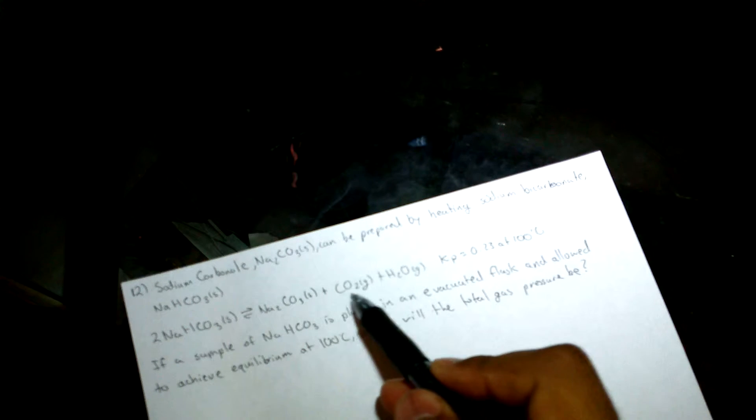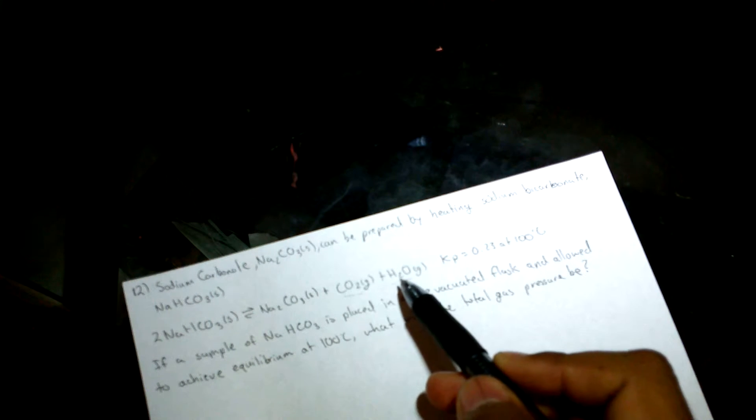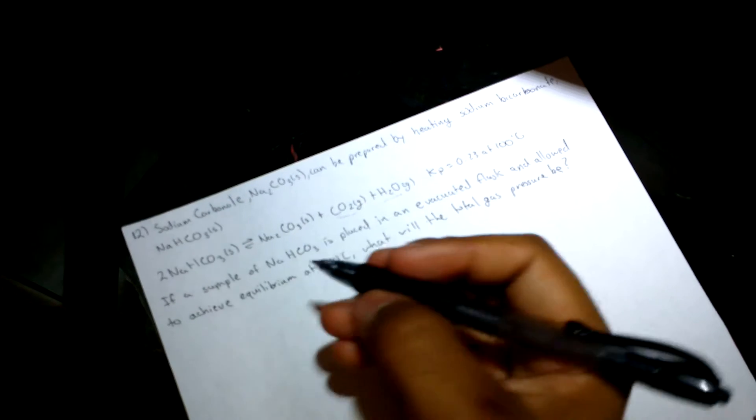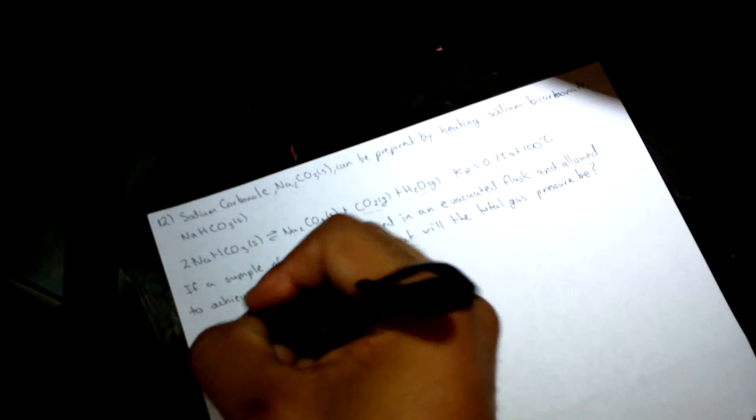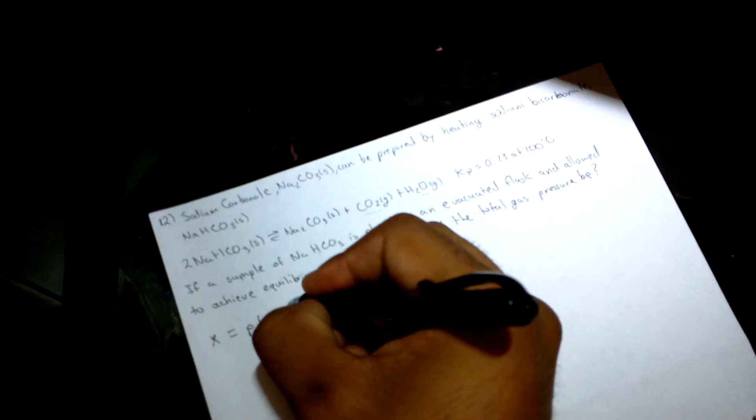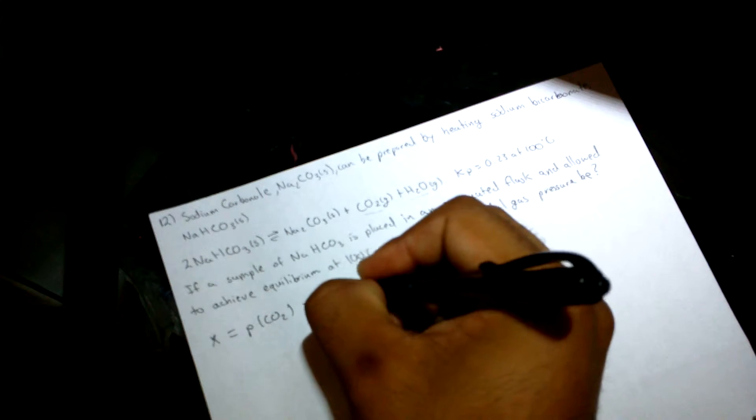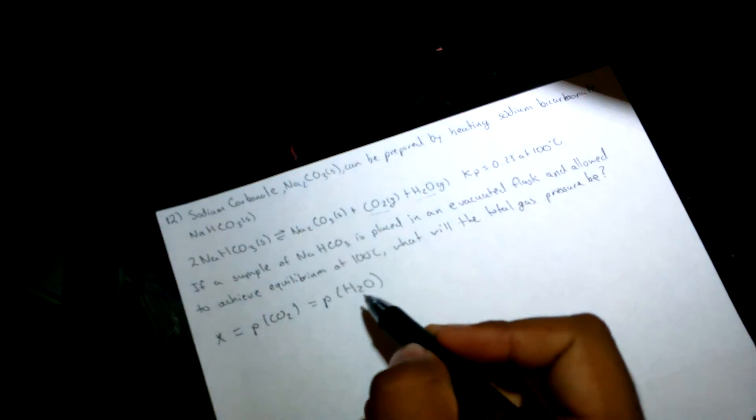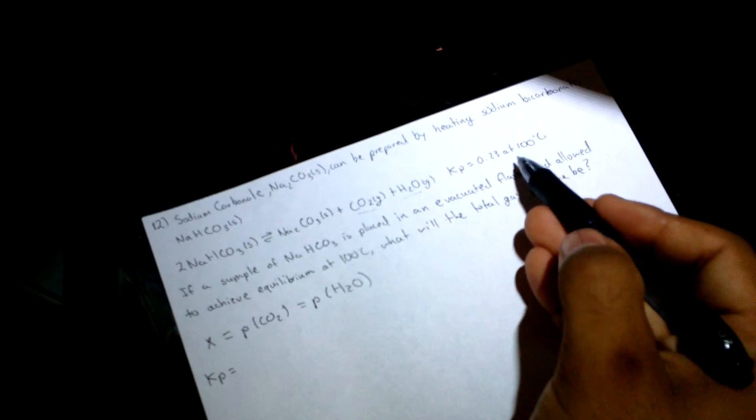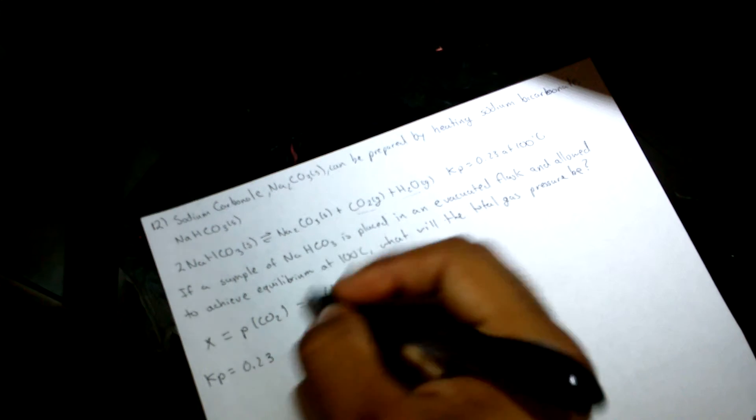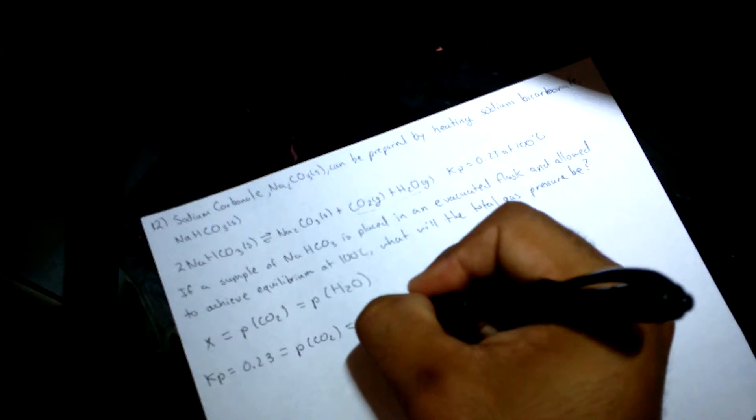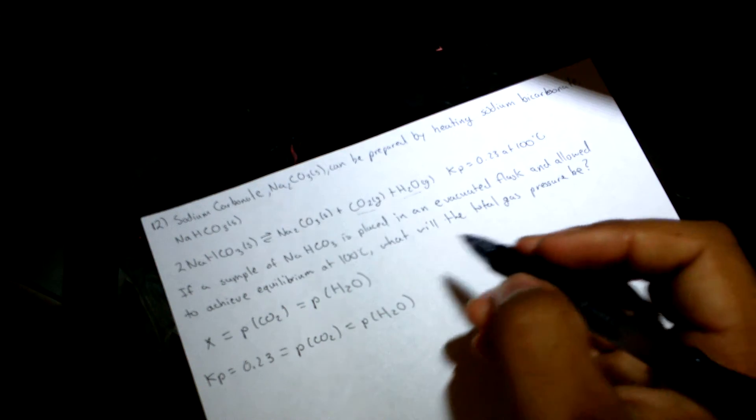So we can set up pressure x equals pressure of CO2 equals pressure of H2O. Everything here is the same. From there, we can say that KP, which is given as 0.23, equals the pressure of CO2 which equals the pressure of H2O.